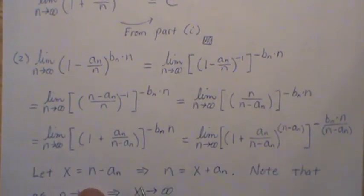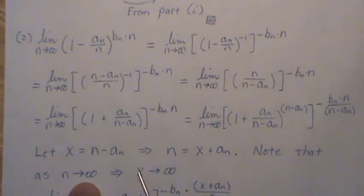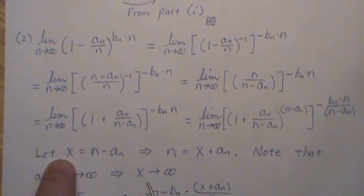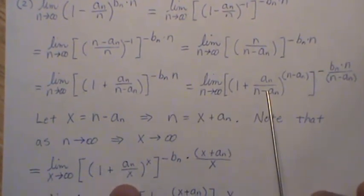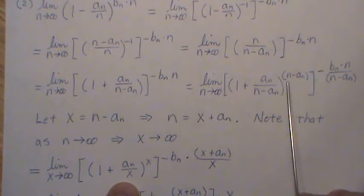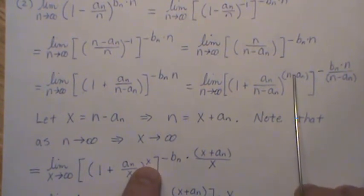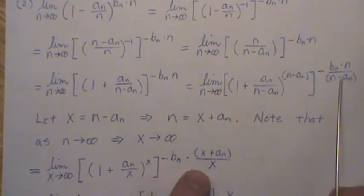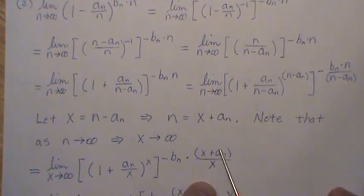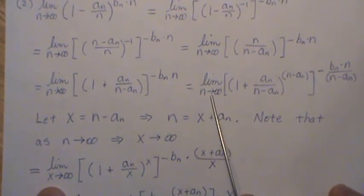But notice that if we do a variable change and let X equal n minus a/n, that implies n is X plus a/n. And note that as n goes to infinity, X goes to infinity. So this can be rewritten like this. So this piece is X, and this piece is X. We have minus bn, which is that. The n minus a/n is X, and the n is X plus a/n, right? So this is equivalent to this. And now X is going to infinity instead of n.